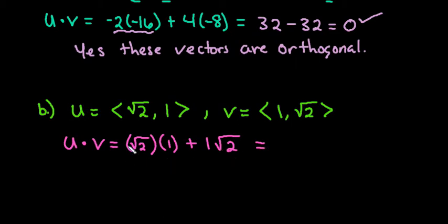If I simplify this, I have √2 plus √2, and since none of them are negative, this would give me 2√2.